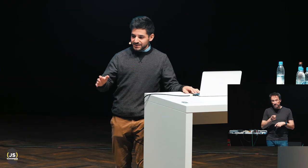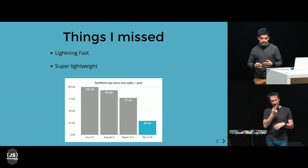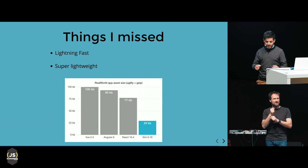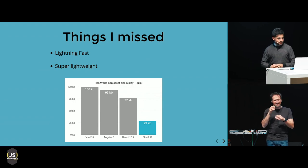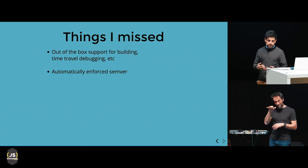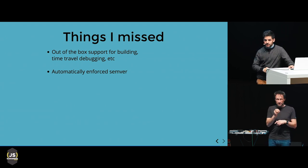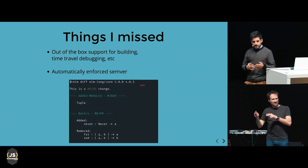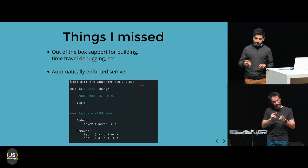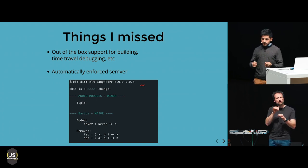Elm also has out-of-the-box support for building, bundling, and time travel debugging. And it has automatically enforced semantic versioning — when publishing a new package version, the compiler checks that you didn't change any of the publicly exported functions or types. If you did, it tells you this is a major change so you have to bump the version. This makes upgrading dependencies super safe.